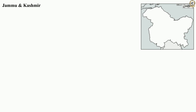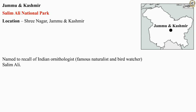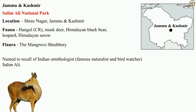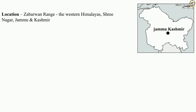To honor the famous Indian ornithologist, naturalist, and birdwatcher Salim Ali, the Salim Ali National Park is located in Srinagar, Jammu and Kashmir. One can find mangrove shrubs and berry vegetation here. It is home to hangul, musk deer, Himalayan black bear, leopard, and Himalayan serow. The national park is also known as the City Forest National Park, located on the eastern side of Dal Lake in the Zabarwan range.